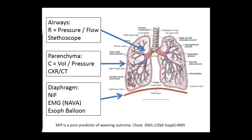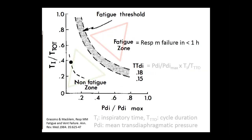In addition, accurate measurement of NIF depends on patient effort. It's suggested you use a one-way valve that allows exhalation but not inhalation, leaving it for 20-25 seconds to maximize the patient's inspiratory effort. It's a pretty tough task, and it still doesn't assess the mechanics involved.